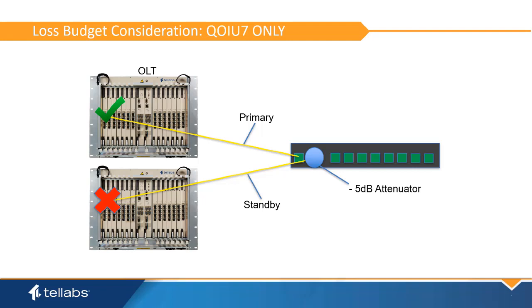Also, a two-input splitter typically adds 3 dB of loss to the optical budget. This combined 8 dB of loss must be planned for within the optical budget of the system being deployed.